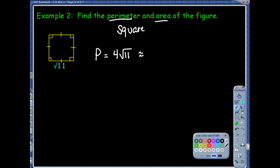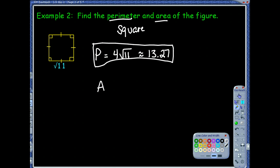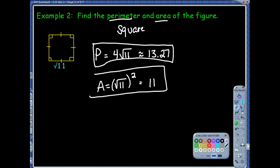If you want to give the approximate decimal, that would be 13.27. That's our perimeter — one of the things we had to find. They also asked for the area. The area of a square is side squared, so we take radical 11 and square it. When you square a square root, they're opposite operations — it undoes the radical, which means you're left with the radicand, just 11. Notice we're not labeling these with units right now. If they don't give you a unit, we're not going to be too picky, but if you see centimeters or inches marked, make sure you do label those answers.